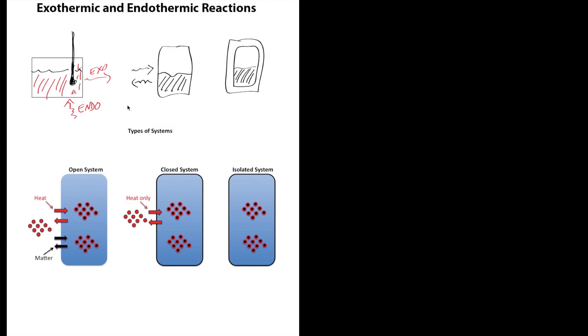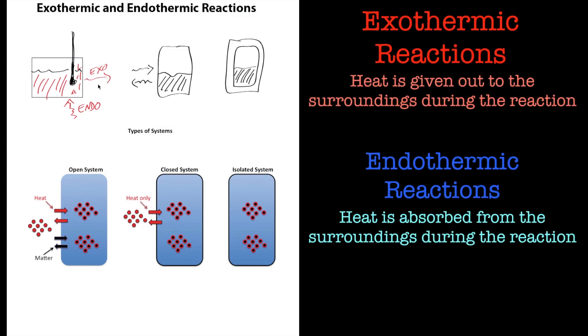So exothermic reactions, heat is given out, energy is lost from the system. And endothermic reaction, energy is taken from the environment, from the surroundings into the system, so energy as heat goes in to the system.